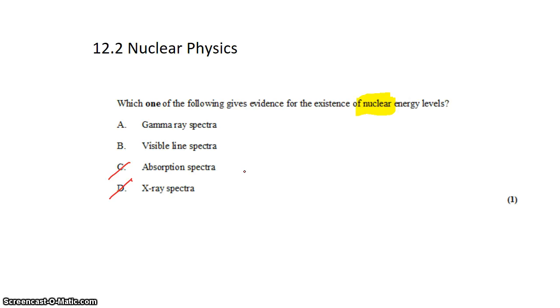And it can't be visible line spectra because, third time in a row actually, visible line spectra are the result of emissions from electrons. So all three of these are electron properties.